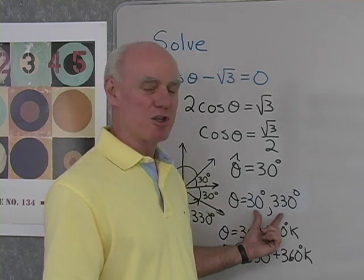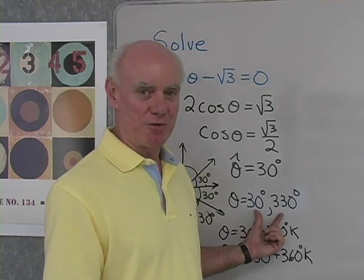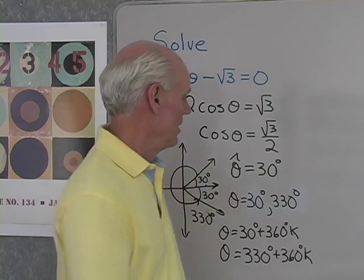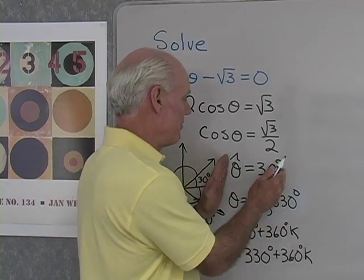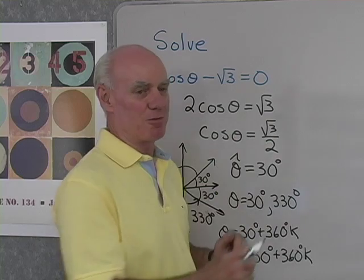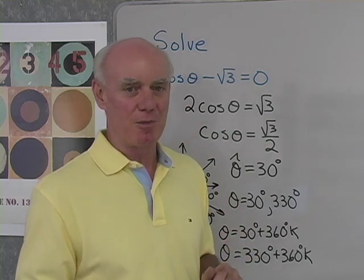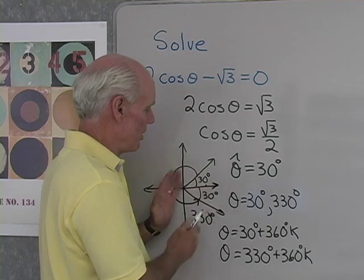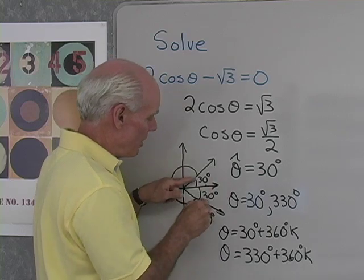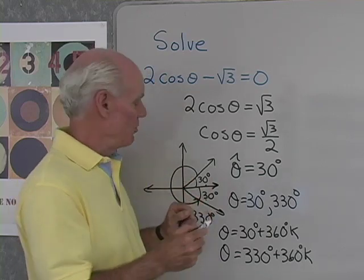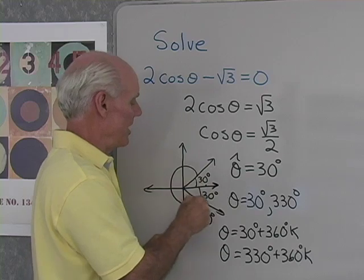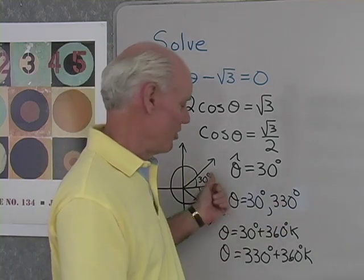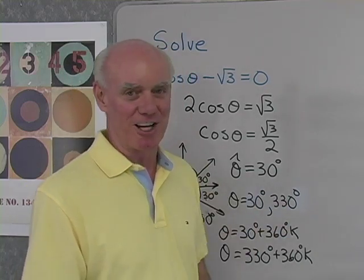Here are my solutions between 0 and 360, and here are all solutions to that equation. The method is: find the reference angle, check the algebraic sign of the trig function — that tells you in which two quadrants to go — then write your reference angle in those two quadrants and name the corresponding angles.